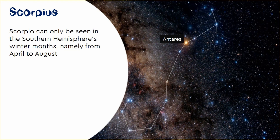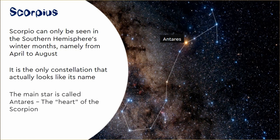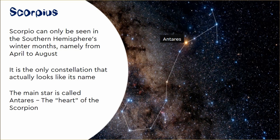Scorpius can only be seen in the winter months, from April through to August. When you look at Scorpio in the winter months, you very seldom can see Orion too, but for a very short time of the year Orion and Scorpio share the night sky. Scorpio is the only constellation that looks like its name suggests — if you connect the stars you can actually see the body of a scorpion. The main star is called Antares, meaning the heart of the scorpion, and it has a very red tinge. The red stars in both constellations are red giant stars, which are red because they are at the last of their life cycle.